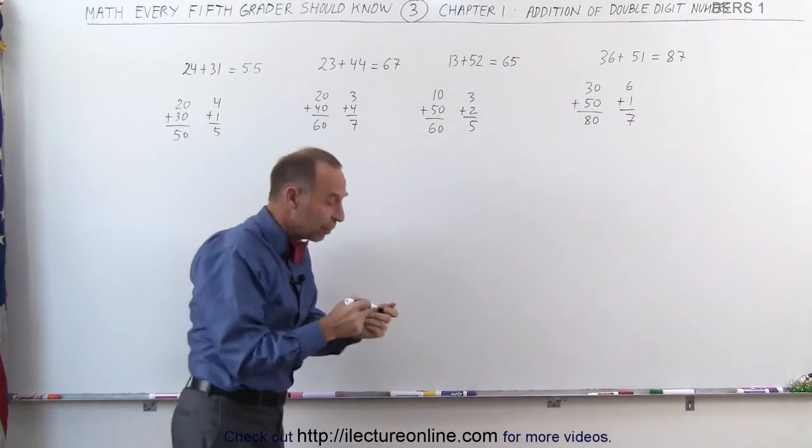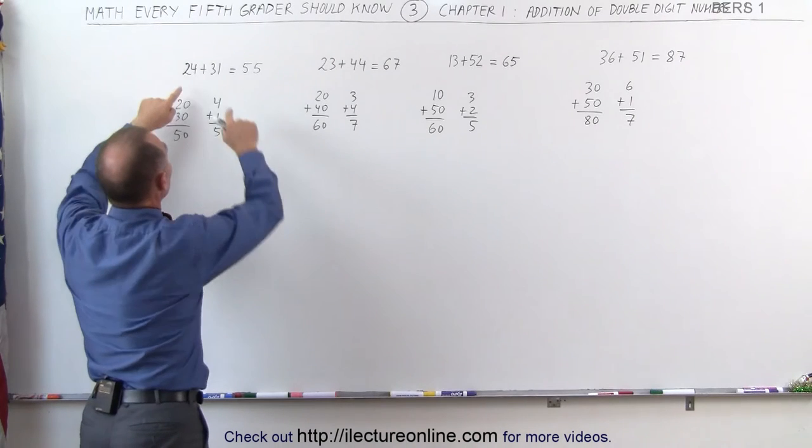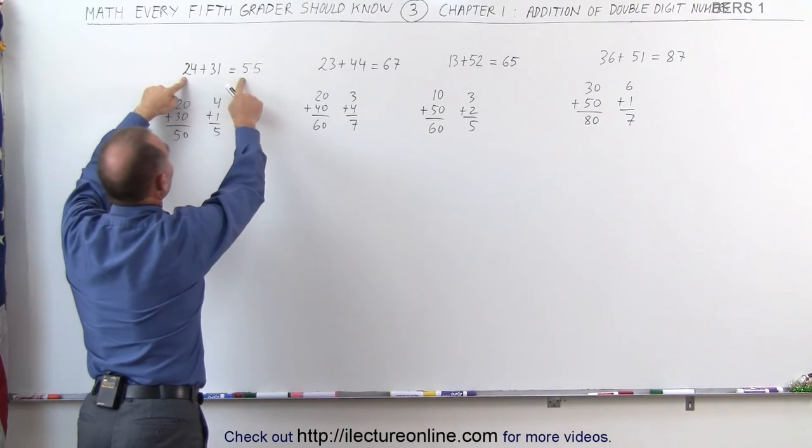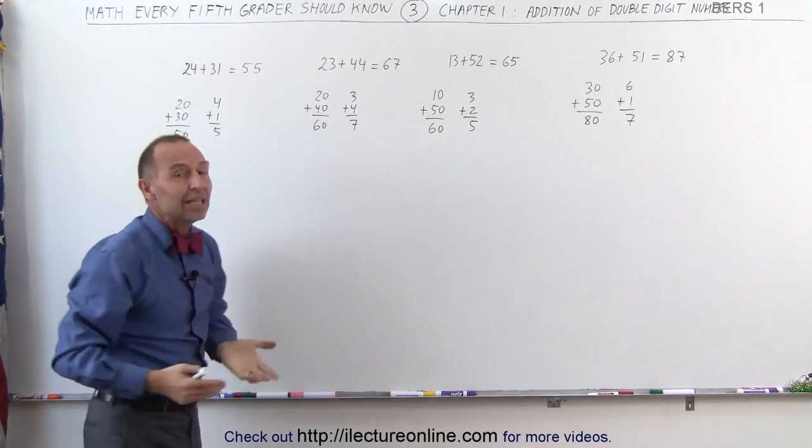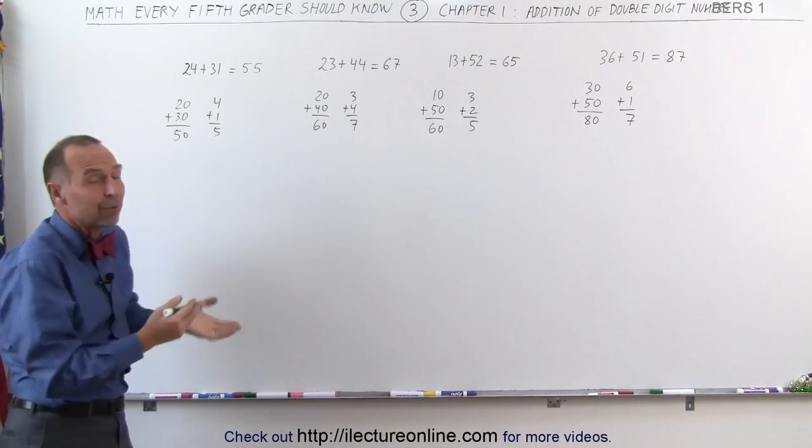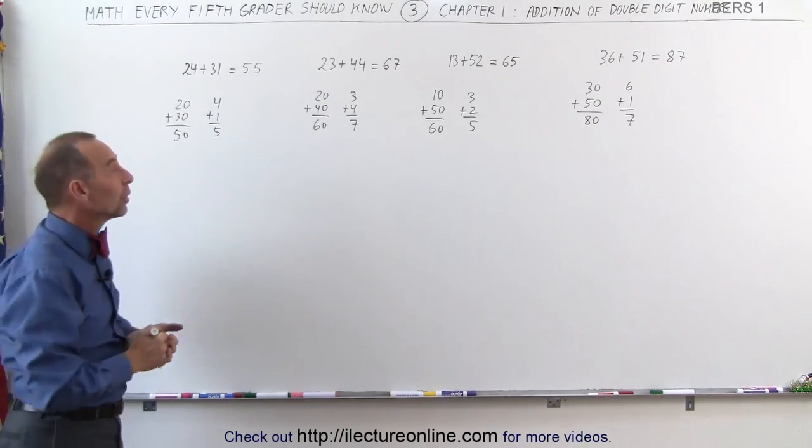So you can see that when you have double digit numbers, and when you add the first two numbers together, it's less than 10, and you add the second two numbers together, it's less than 10, that makes it fairly easy. And that's the first type of double digit additions that we can encounter.